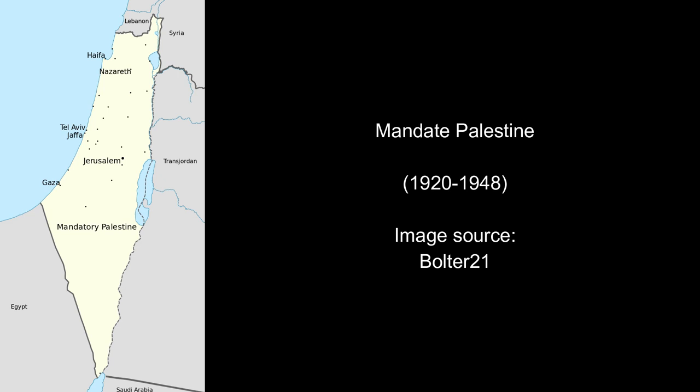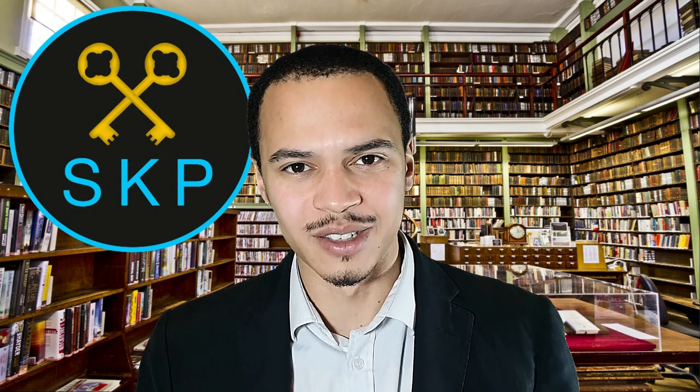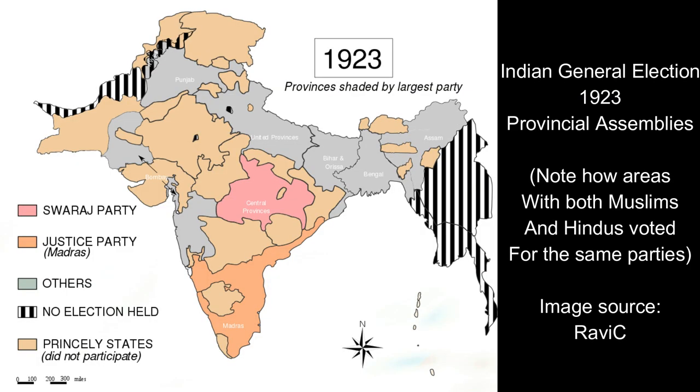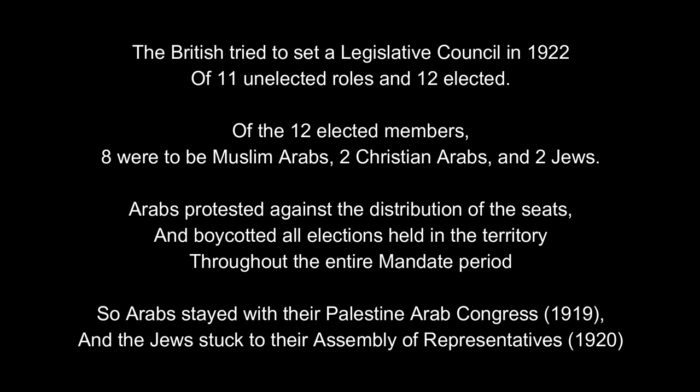In 1920 the Mandate of Palestine was established, comprising what we today think of as Israel/Palestine. During this time you could already see the seeds of the later Arab-Jewish conflict being sown. Rather than a combined legislature bringing people together, completely separate and parallel organizations were set up: Arab nationalists formed the Palestine Arab Congress in 1919, and a year later Jews set up the Assembly of Representatives. Both sides were looking out for their own interests with no real dialogue between them.